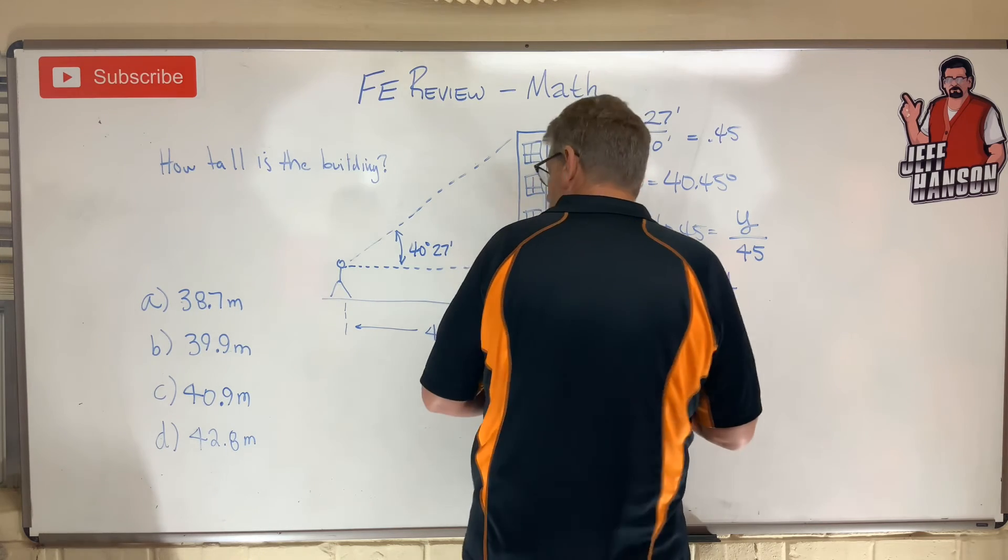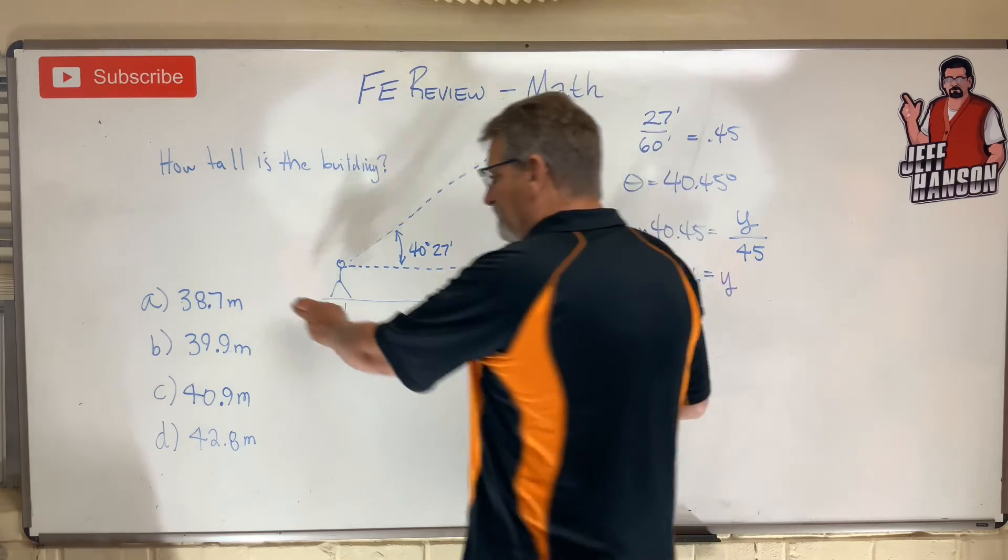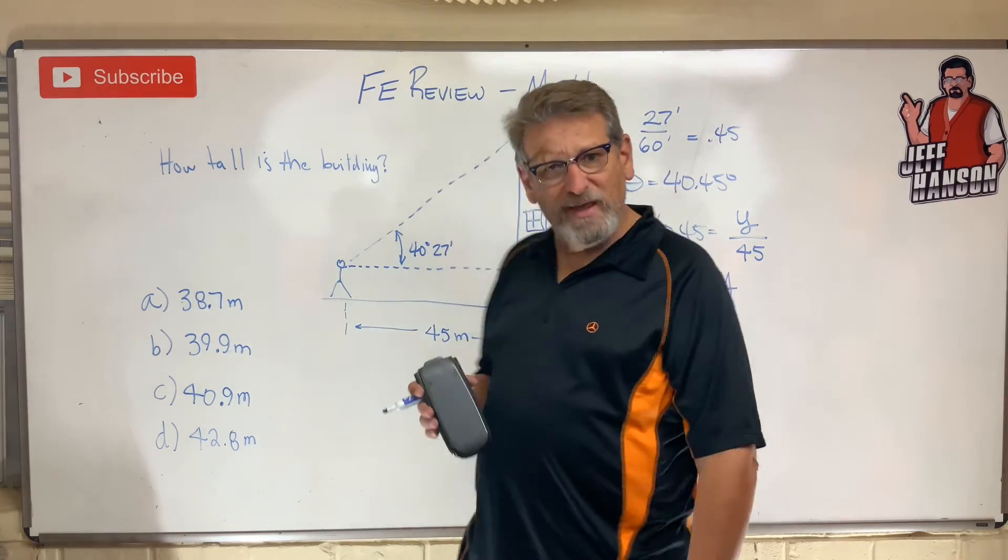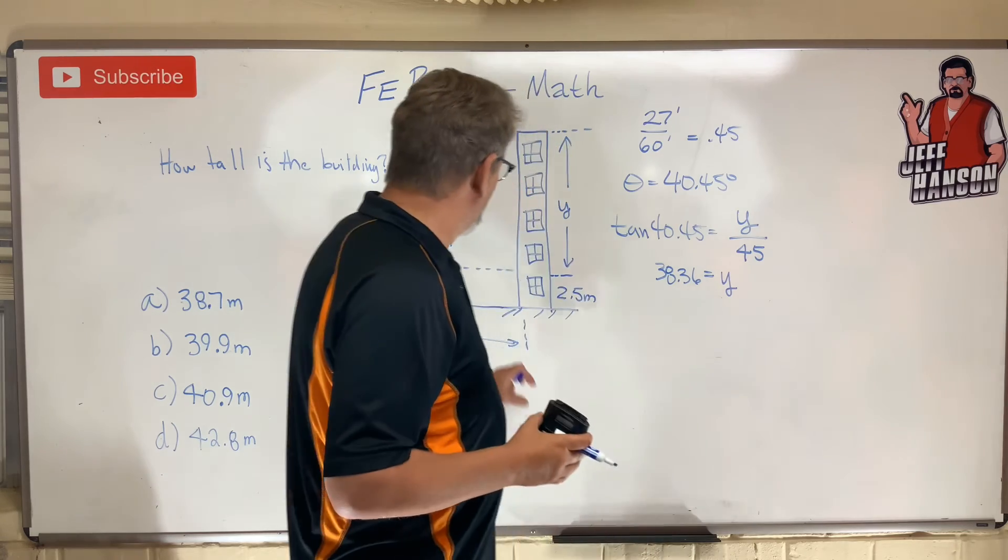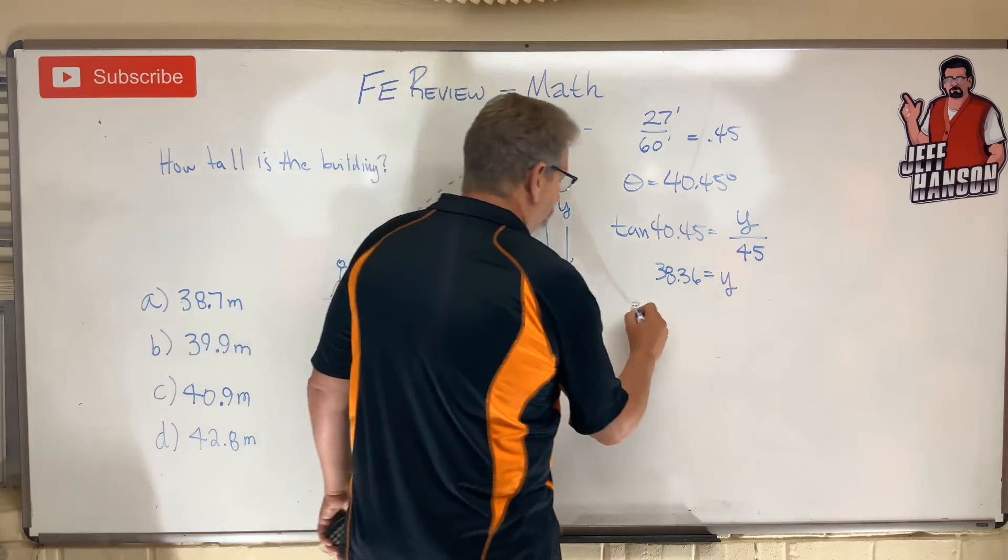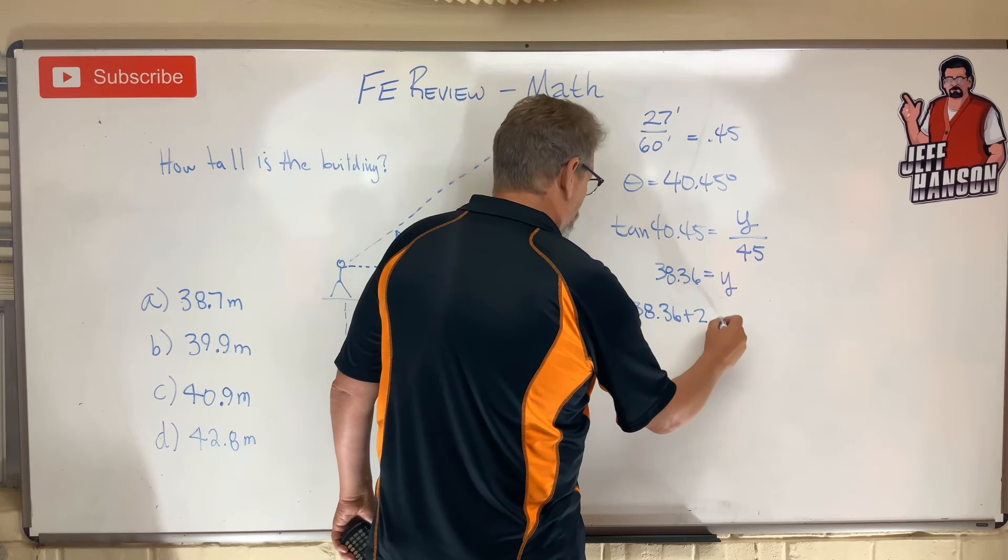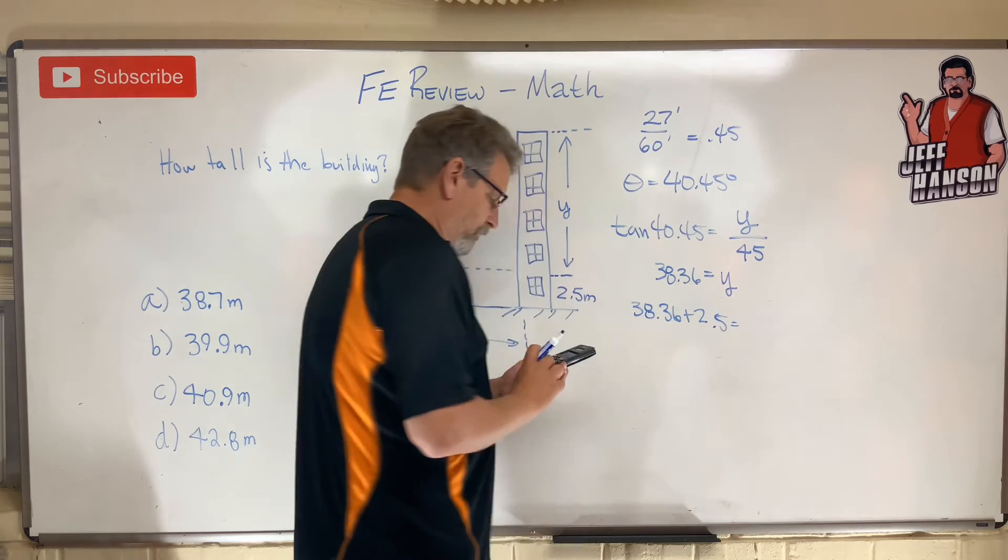Okay, 38.36. Well, I don't know, that's pretty close, it's probably... oh yeah wait a second, don't forget about this bit down here. So we need to do 38.36 plus 2.5 for the total height of the building. Plus 2.5 equals 40.86.